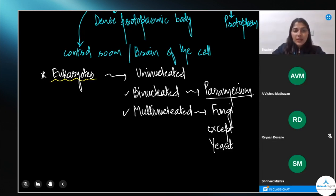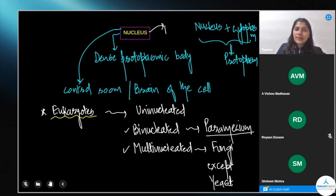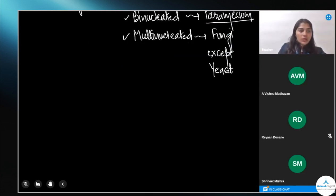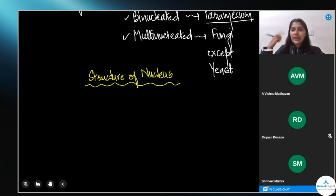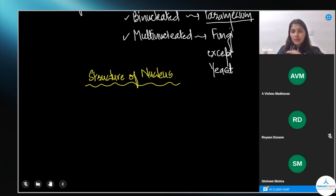The nucleus is the brain of the cell, and it was discovered by Robert Brown. Now let's look at the structure of the nucleus. You will be studying the extension of this topic in your next classes — it is there in Class 11 and will be related to chromosomes and to meiosis or mitosis cell division. So it is very important to first learn the basics.